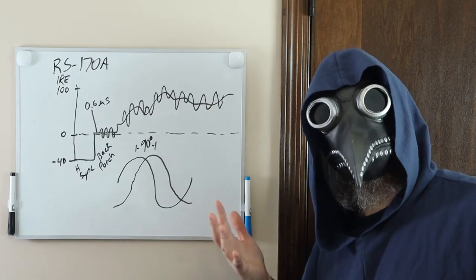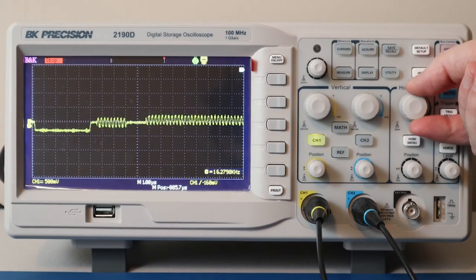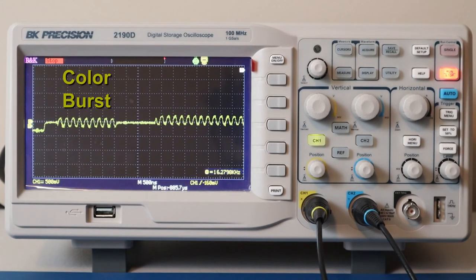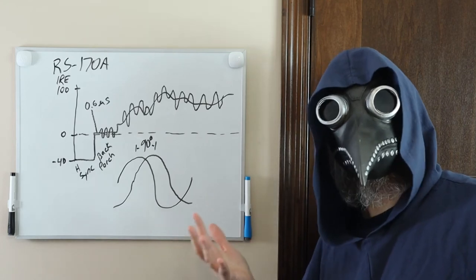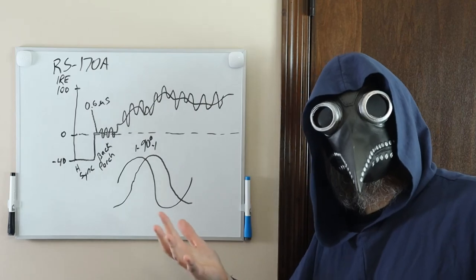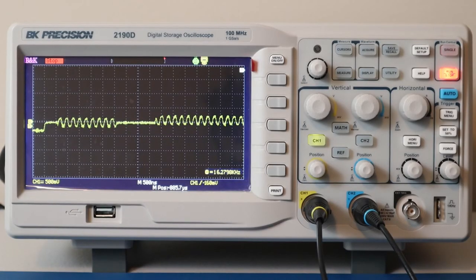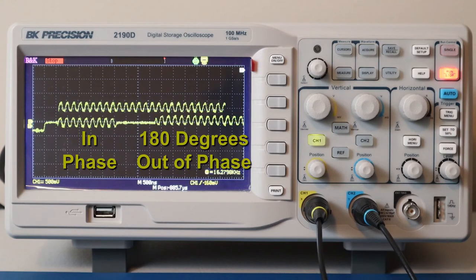Now, let's zoom in to see the color burst signal on the back porch. You can see there are about nine sinusoidal waves and we said about eight to eleven was good. You can also see the color signal over the luminance signal. Now, since the screen is blue, the image sinusoid should be about 180 degrees out of phase with the color burst signal. So, I will overlap the sinusoidal wave over the other waves. And you can see we are in phase with the color burst, but 180 degrees out of phase with the image signal. So, this checks out.